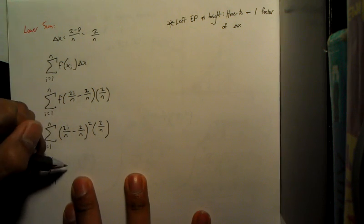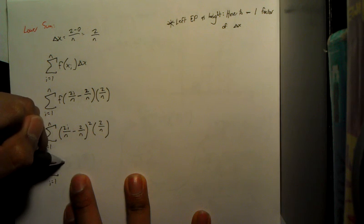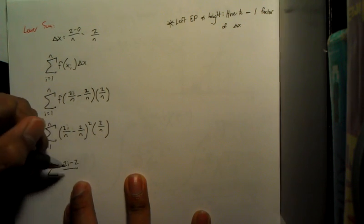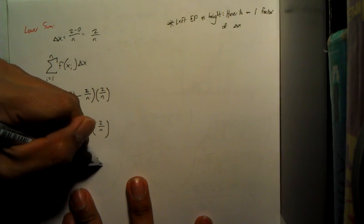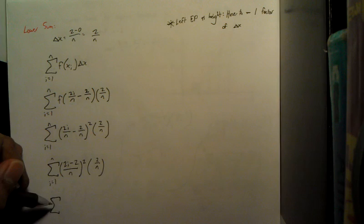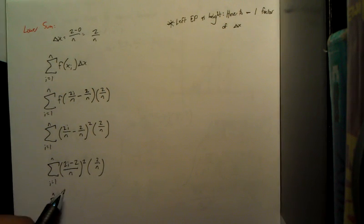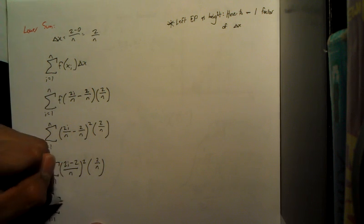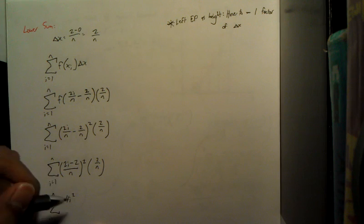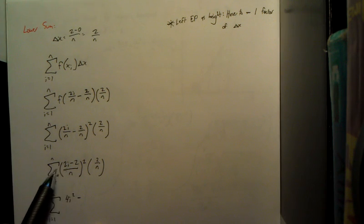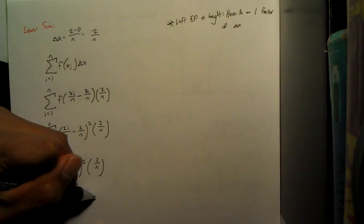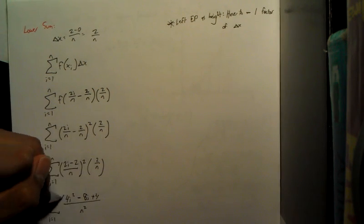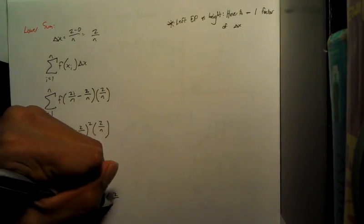We could do some, you can make this 2i minus 2 over n squared times 2n. And then if you were to FOIL this all out, then you get something like 4i squared minus 2i times negative 2, negative 4i minus 8i, 2i plus 4, all over n squared, and you've still got that 2 over n hanging out.